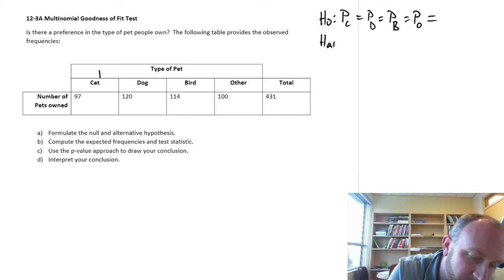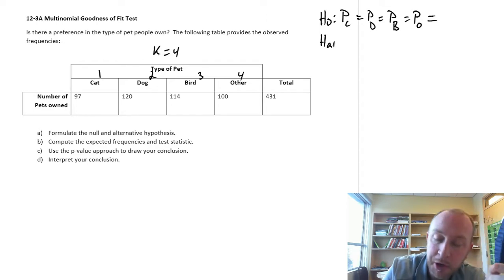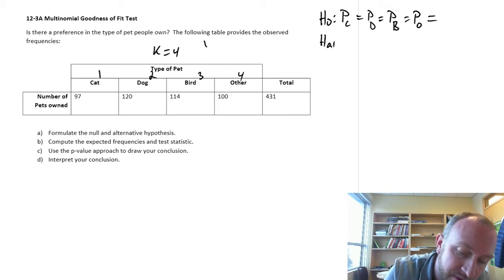They are all equal to, well, here I have 1, 2, 3, I have 4 different categories, k is equal to 4, so this means that each of these probabilities, 1 over k, 1 over 4, so each of these probabilities would be 0.25.